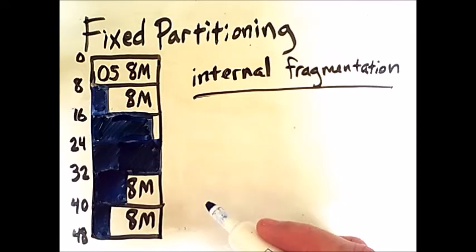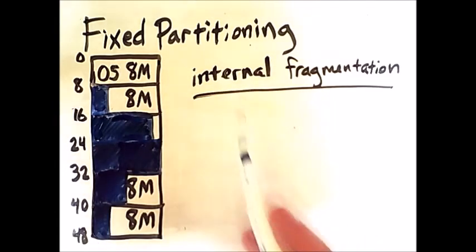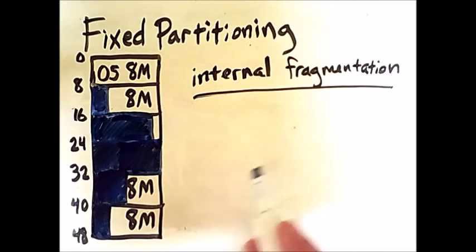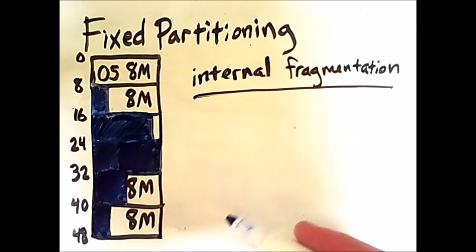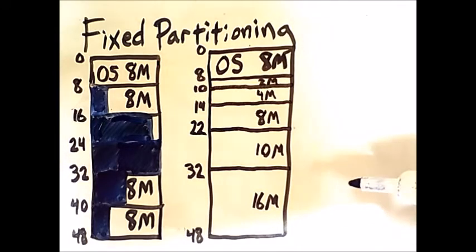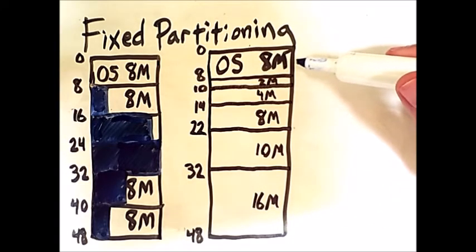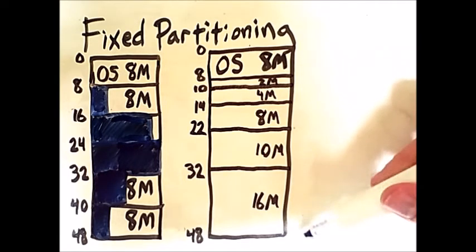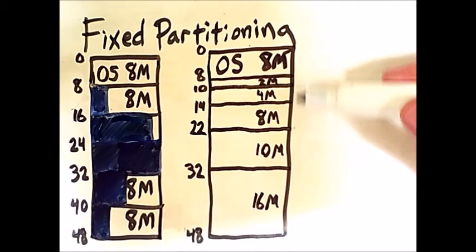An alternative version of fixed partitioning that somewhat solves this issue is to simply have different partitions of unequal size, as shown here. In this partitioning scheme, we still reserve 8 megabytes at the beginning of memory for the operating system, but the remainder of memory is split into partitions of different sizes.